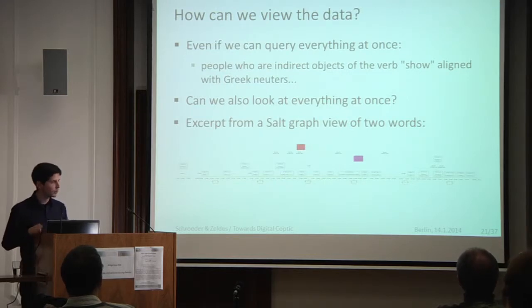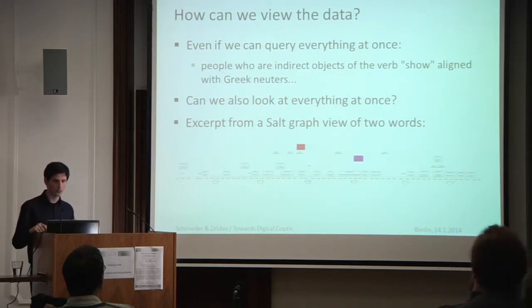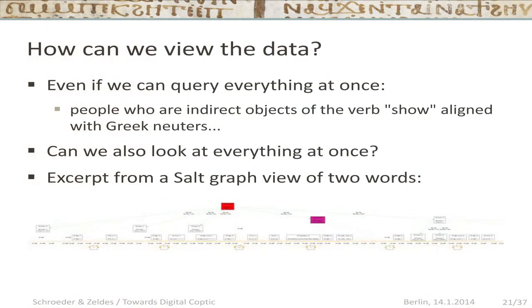Now I move to the second part of the talk: visualizing data. An interesting thing we realized when working with corpora that had very many annotations is that you can't look at it all at once. This is, for instance, a Salt graph of two words from one of our corpora — the two words are the red node and the purple node — and there's no way you're going to be able to read it because there are way too many annotations for the human eye. You need to break it down and partition your data into multiple sensible visualizations that are thematically grouped.